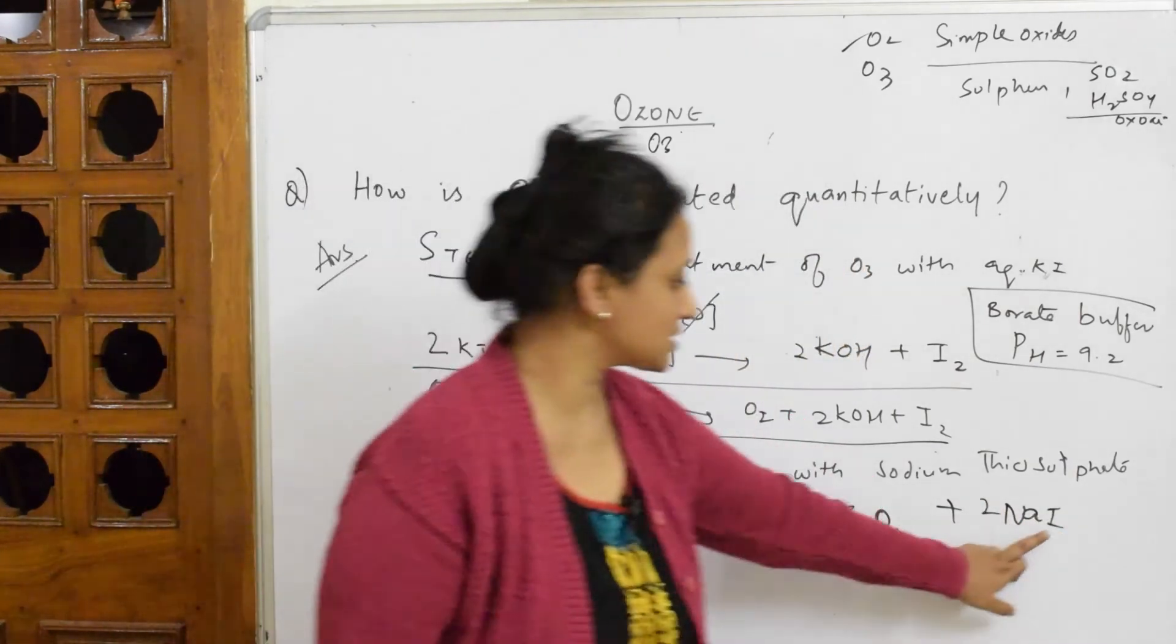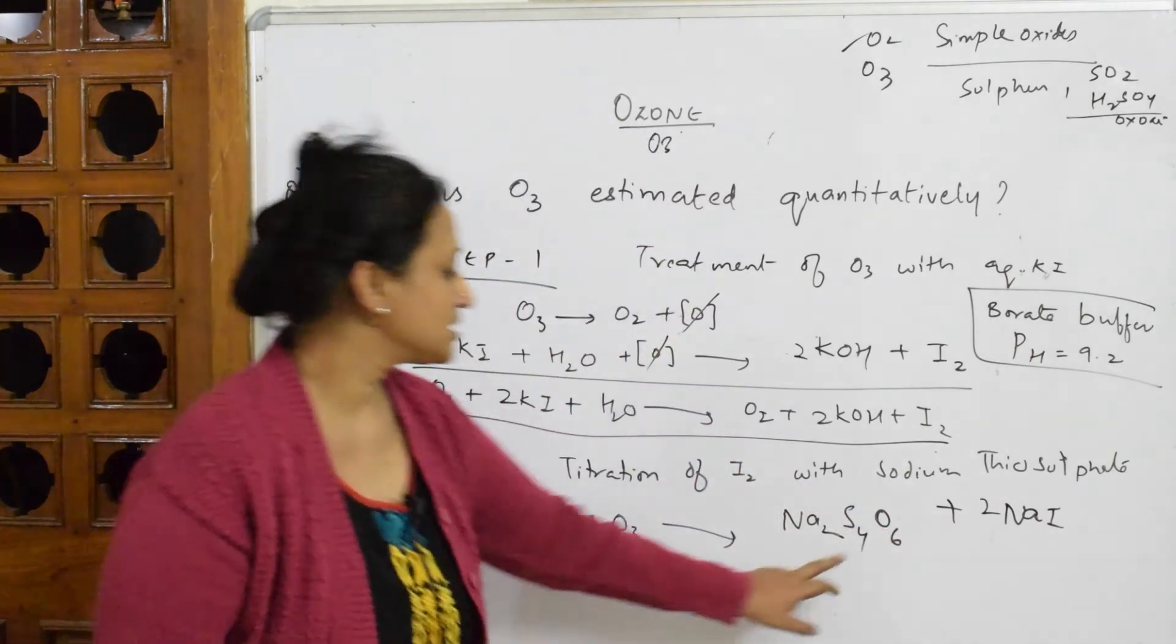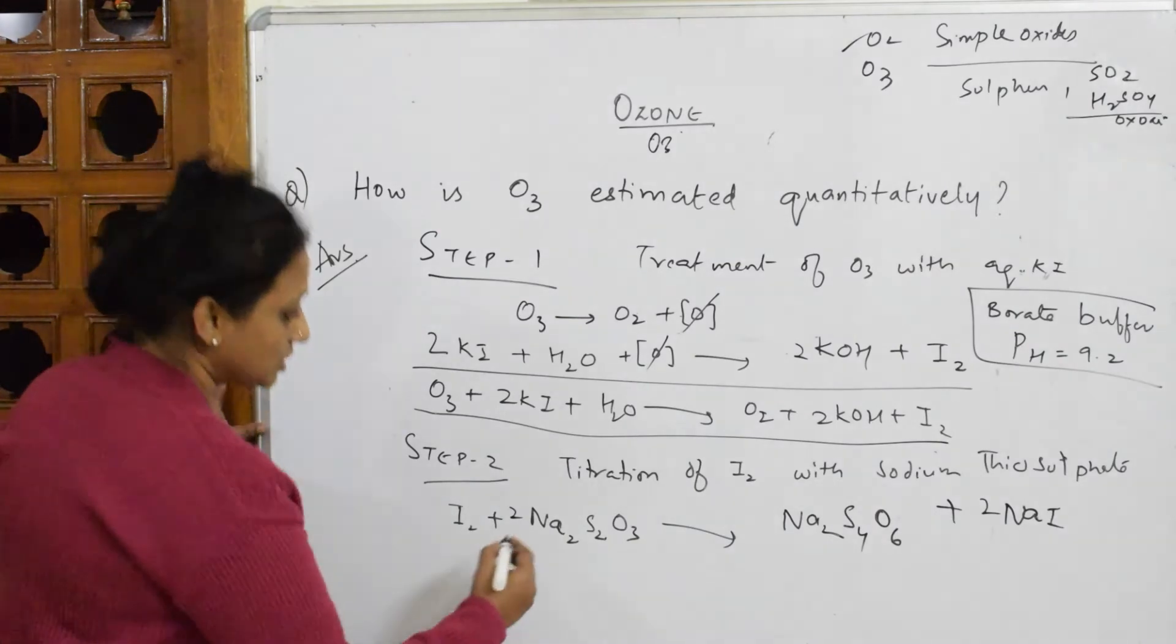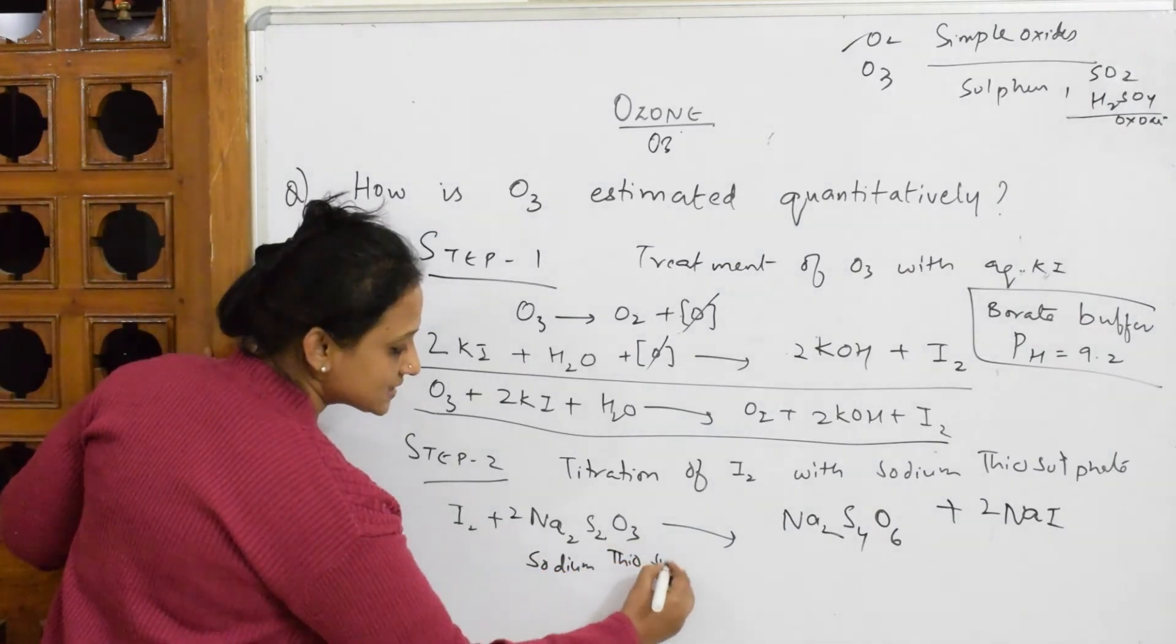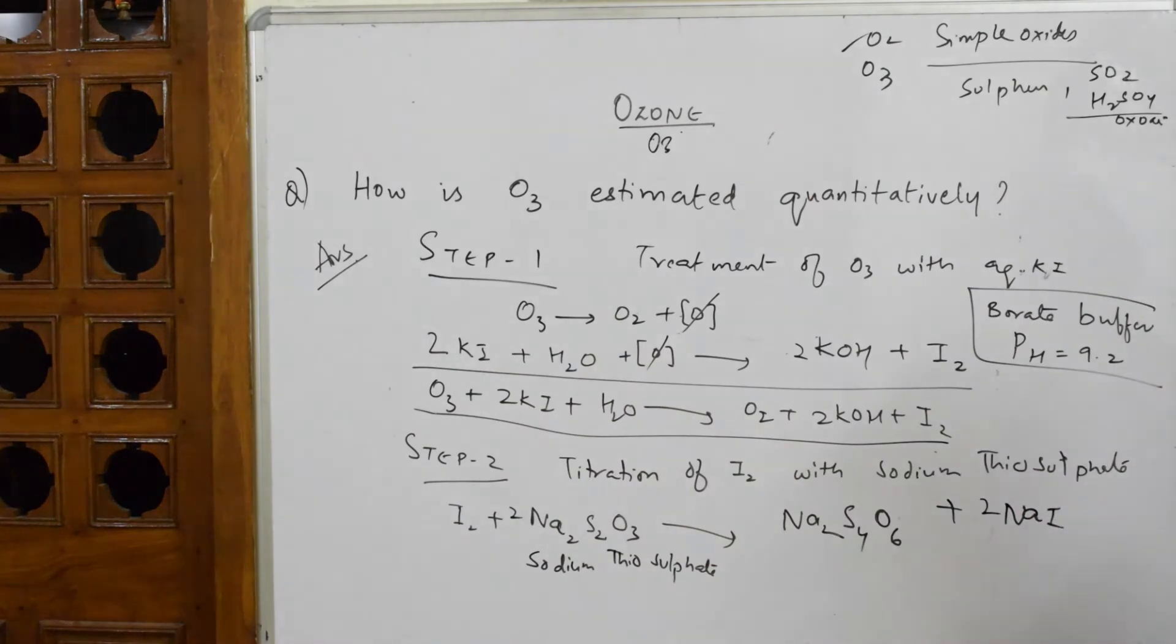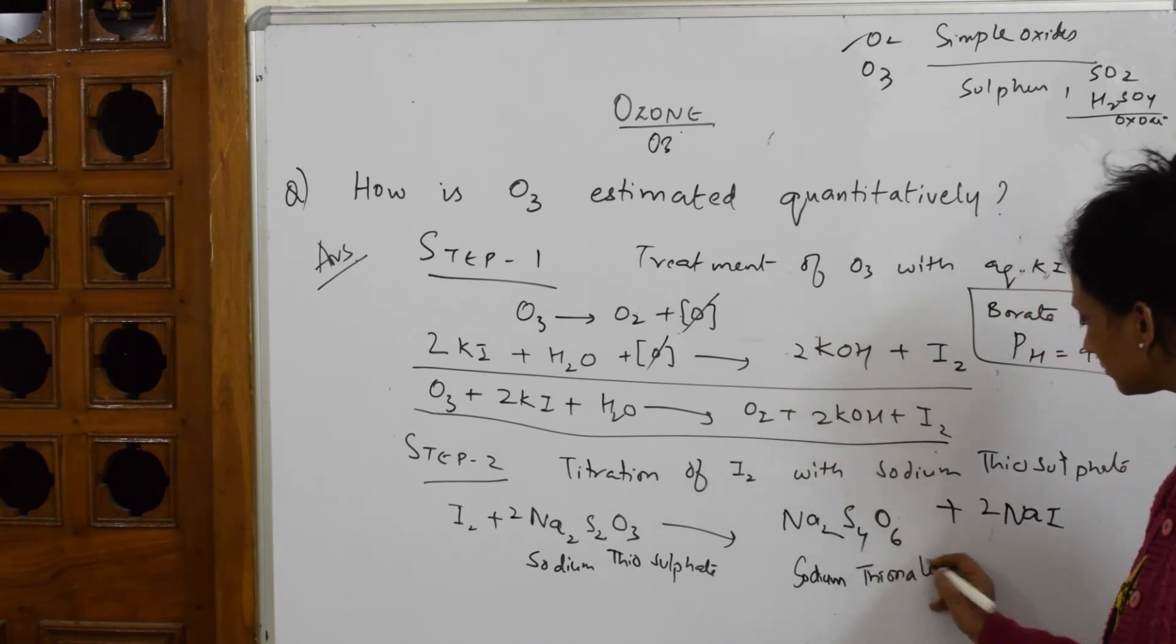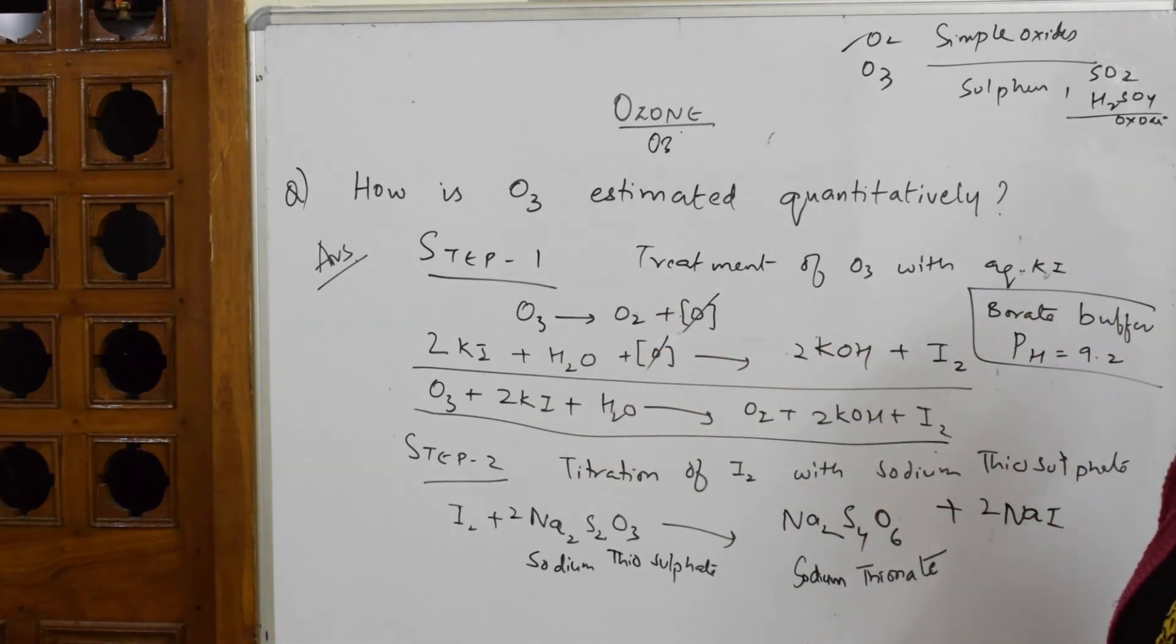Now observe: this is I₂, this is I with two moles, so this is two sodium, this is two sodiums, four sulfur. This is two, two to the four, oxygen is three to the six, it is six. This is called sodium thiosulfate and this is called sodium tetrathionate. So this is the procedure for estimating.